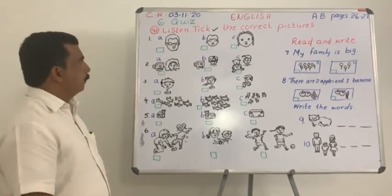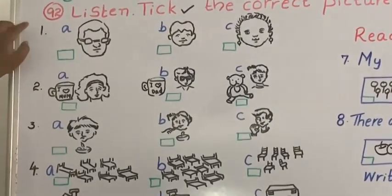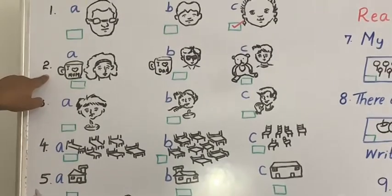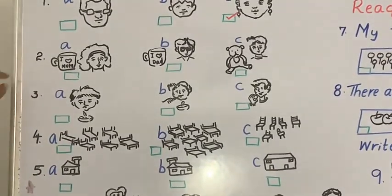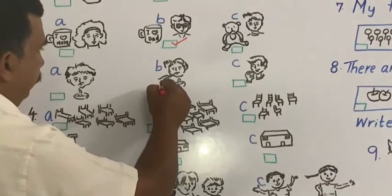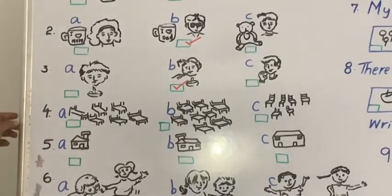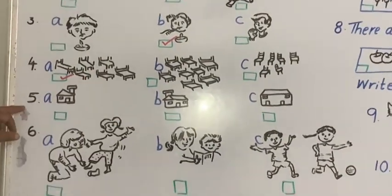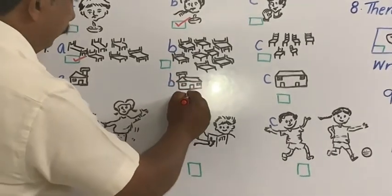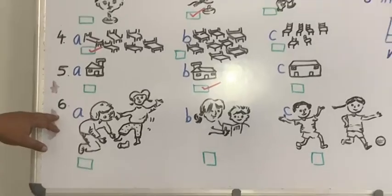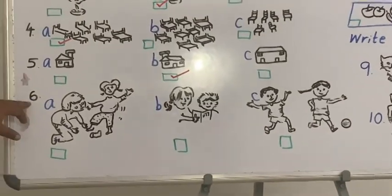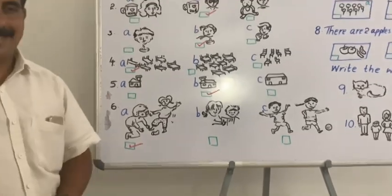Check your answers — CD track 92 plays. Question 1: This is my mother — I call her mum. Question 2: Who is that for? It's for my father — it's his birthday. Question 3: Do you like soup? Yes, I do — I like soup. Question 4: There are six beds. Question 5: How many windows are there? There are two windows. How many doors? There is one door. Two windows and one door. Question 6: The boy helps his little sister. His little sister says thank you.